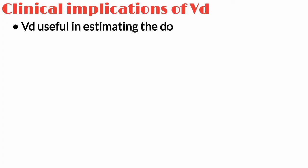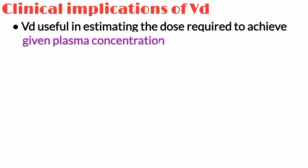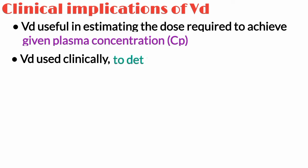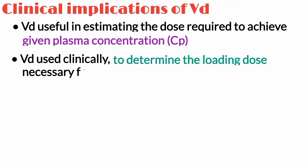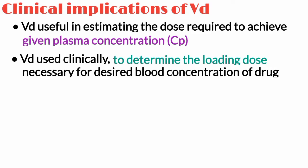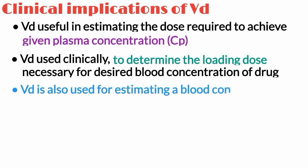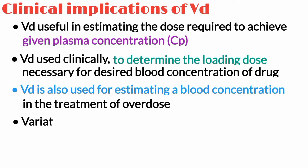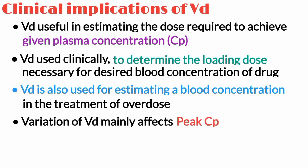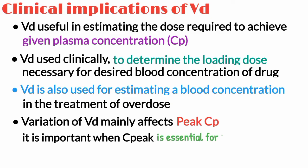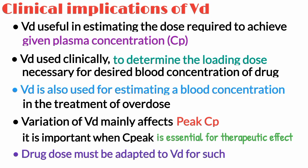Let's discuss the clinical implications of volume of distribution. The volume of distribution is useful in estimating the dose required to achieve a given plasma concentration. It is used clinically when trying to determine the loading dose necessary for a desired blood concentration of a drug, and is also used for estimating a blood concentration in the treatment of overdose. Variation of VD mainly affects the peak plasma concentration of the drug, which is important when peak plasma concentration is essential for the therapeutic effect — for example, hypnotics. Drug dosage must be adapted to the VD for such drugs.